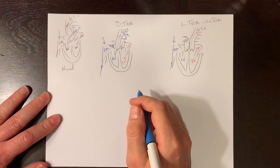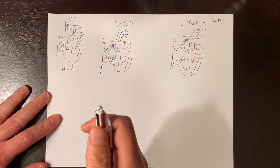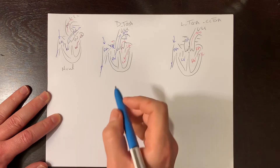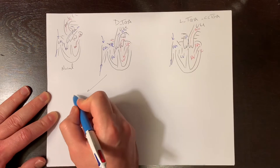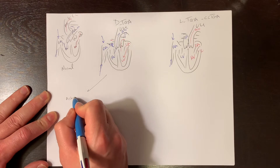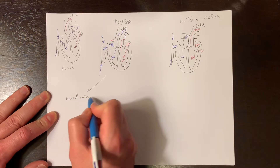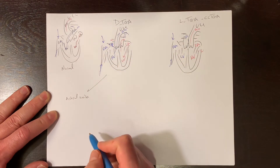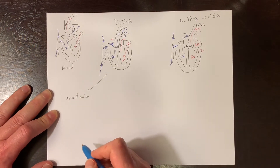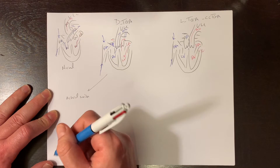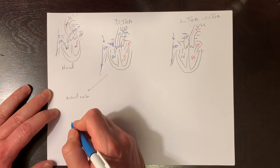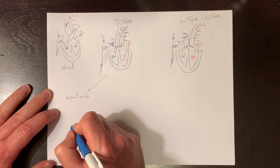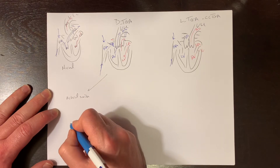Currently, the operation of choice is the arterial switch operation for most patients unless there's associated complicated anatomy. As the name implies, this involves switching the arteries around, but you also have to move the coronary arteries, which is why this operation took a long time to be developed and refined. Dr. Adib Jatene in 1975 was the first to perform it, and it wasn't until the mid to late 1980s that it became universally adopted by most centers.